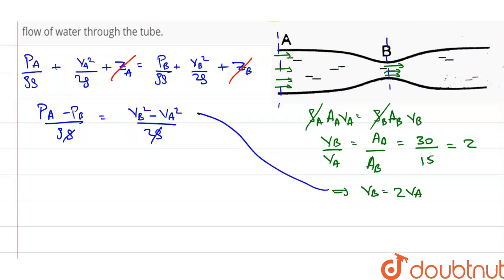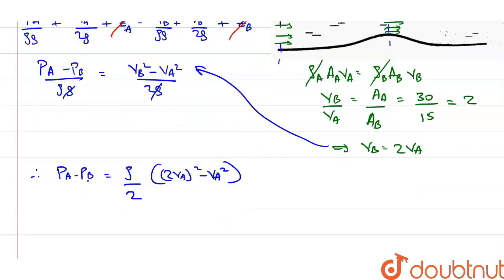This relation can be put into this equation. Therefore, P_A minus P_B is equal to rho by 2, 2 V_A whole square minus V_A square.